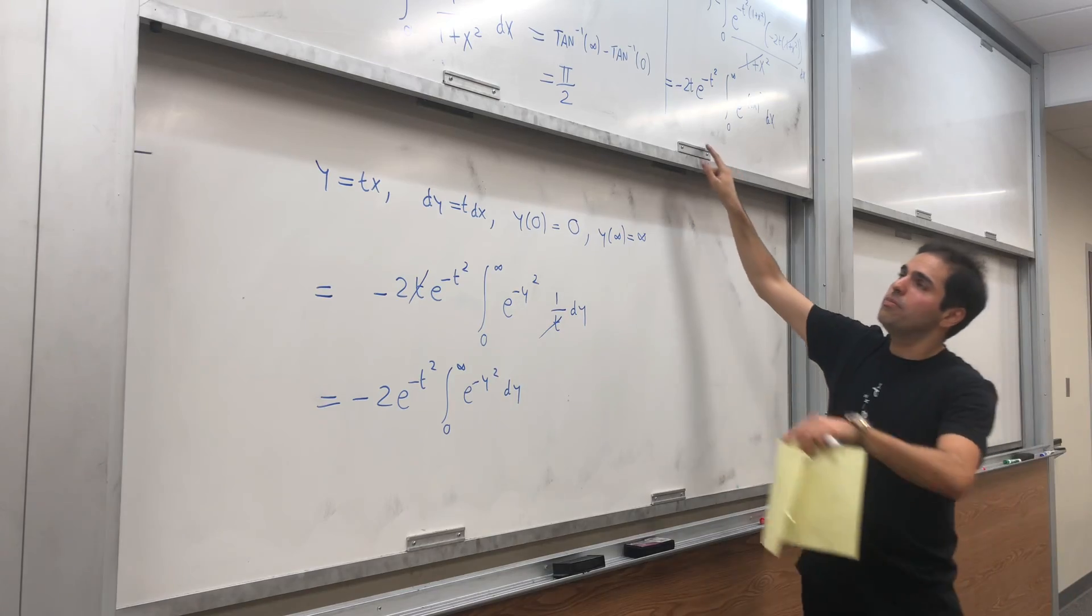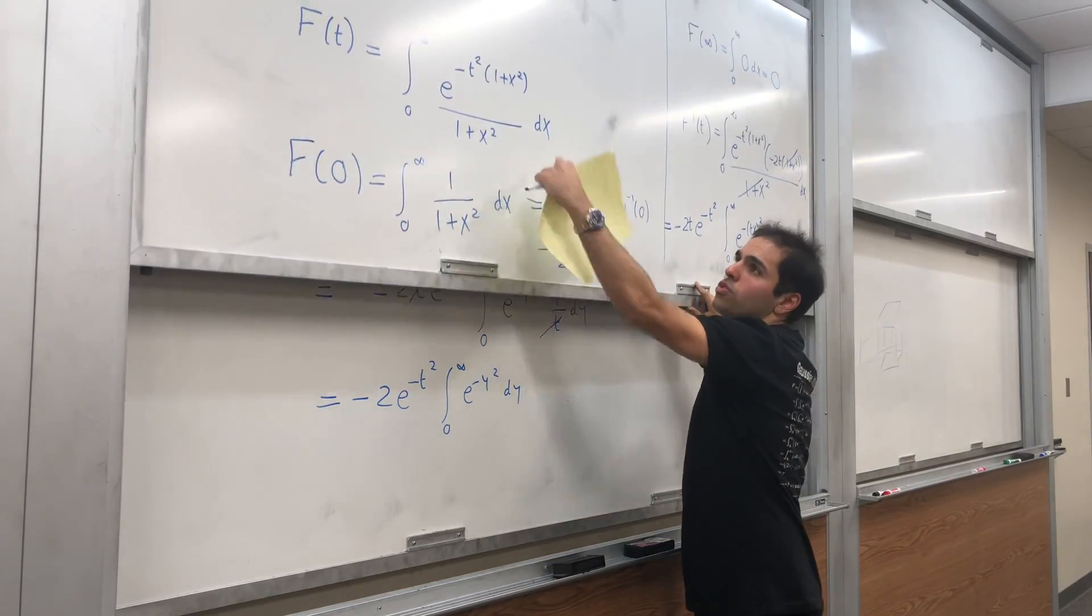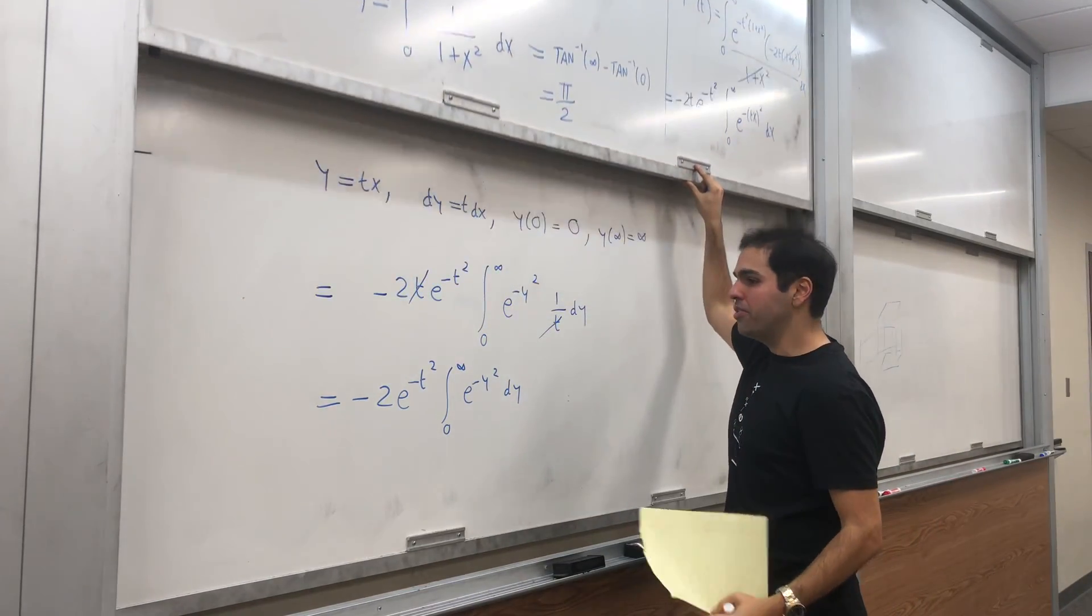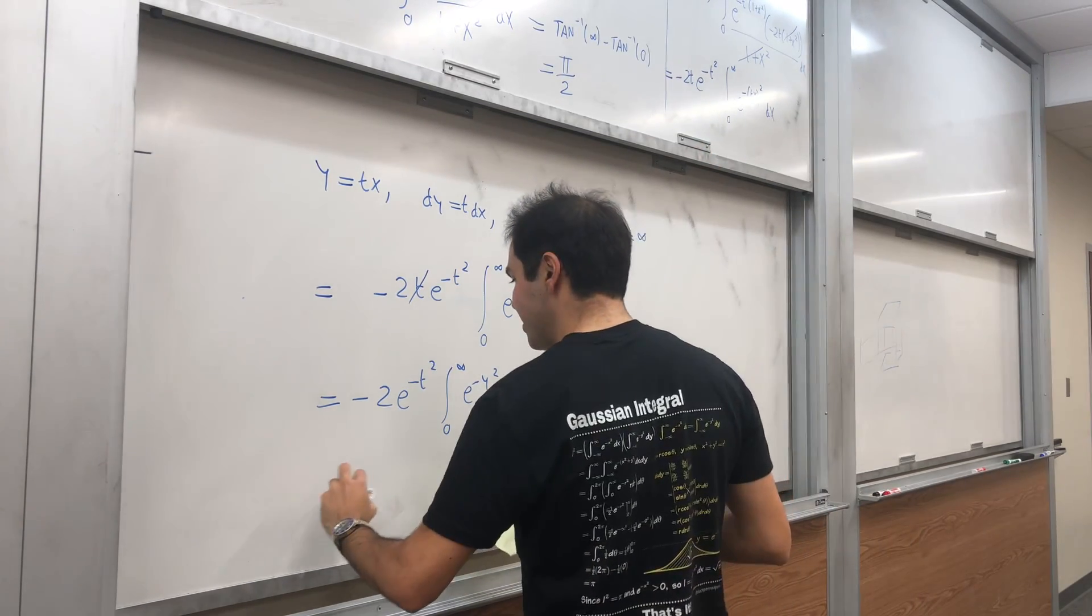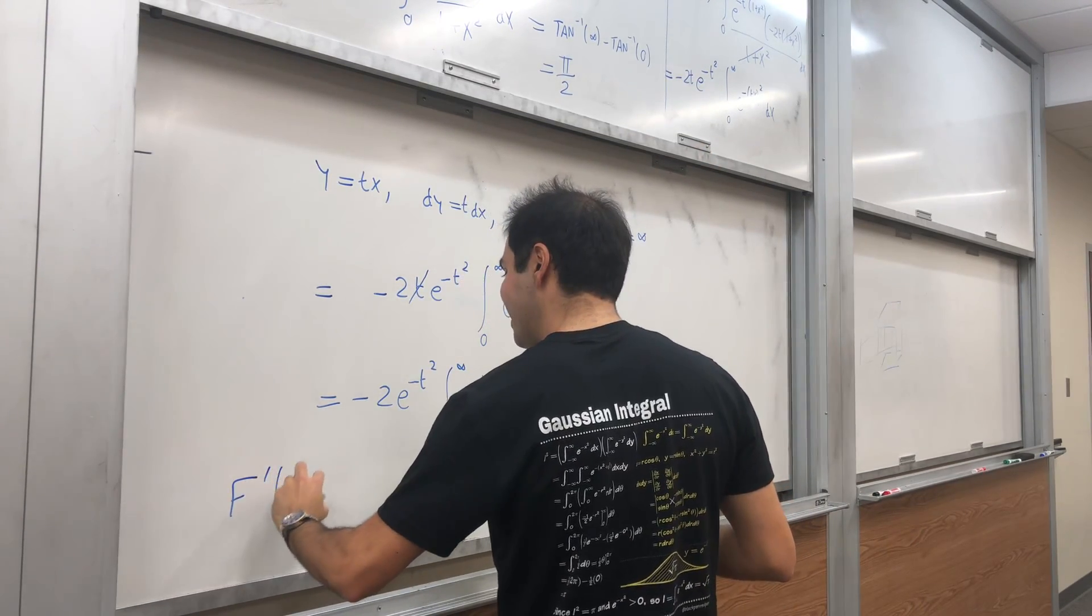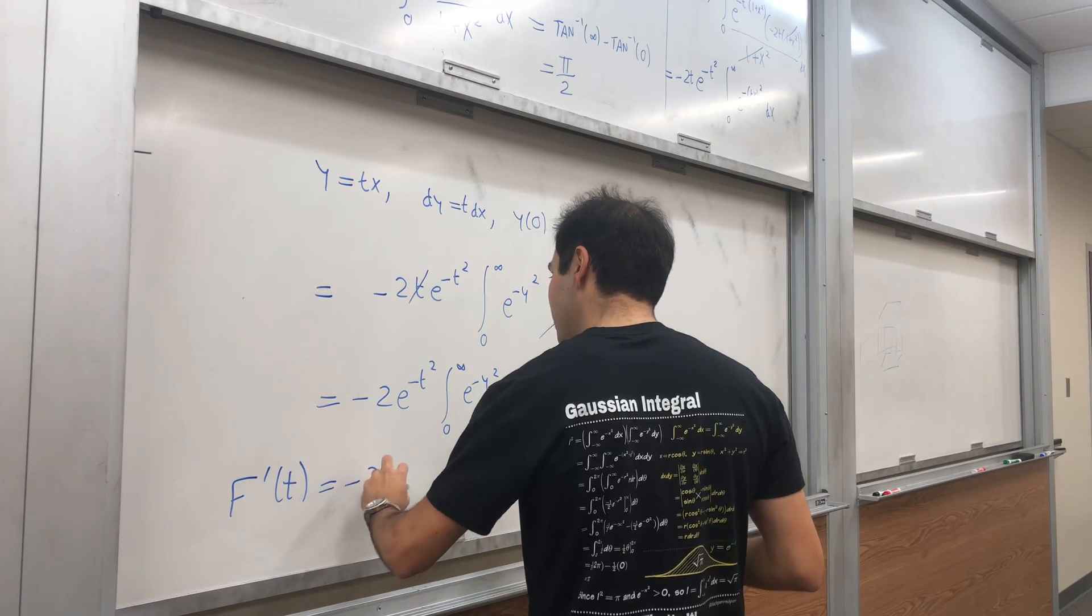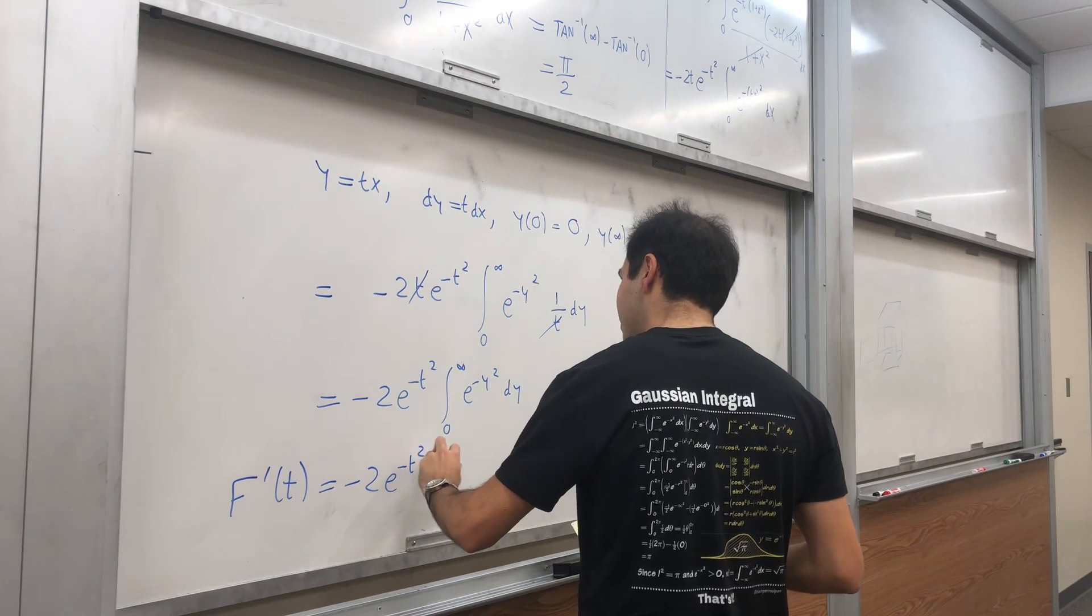because before, there was no Gaussian integral there. So what we get is that this equals to, so f prime of t equals to minus two e of minus t squared times J.